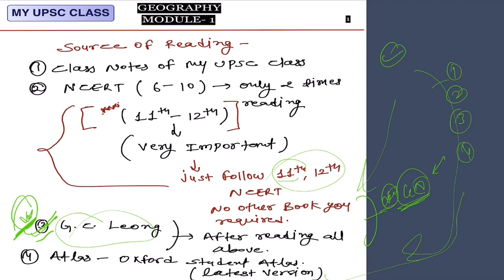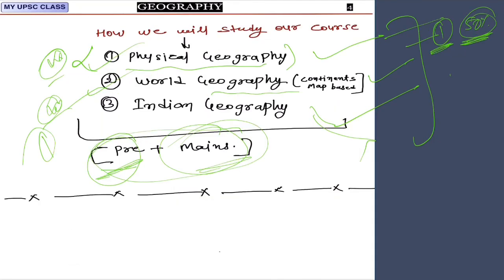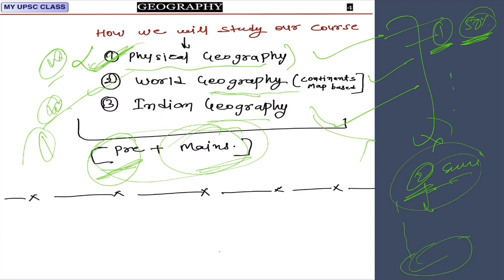You need three resources: class notes and videos first, then 11th and 12th geography NCERT books, then GC Leong. Additionally, one Oxford Atlas — the student variant, latest version — is very important. So student atlas, GC Leong, NCERT books, and class notes are sufficient for geography preparation. In this sequence, the next module will start physical geography, then world geography, then Indian geography, followed by environment as the second subject.